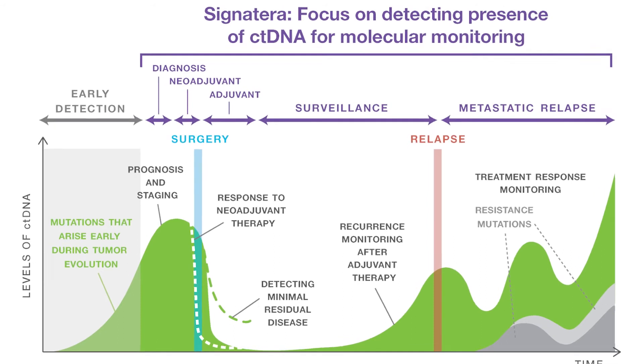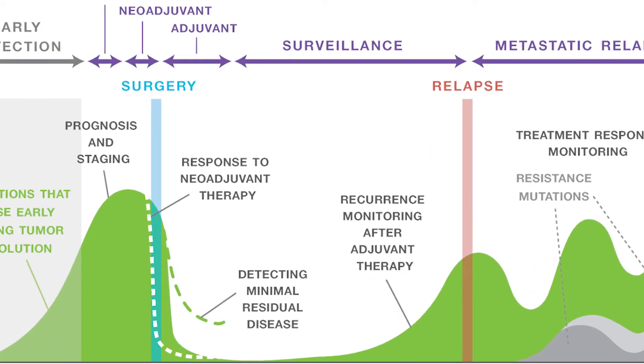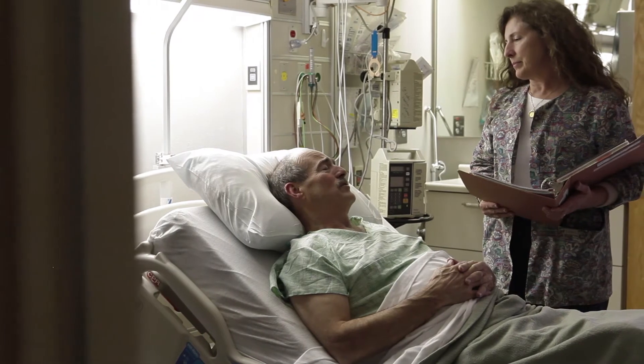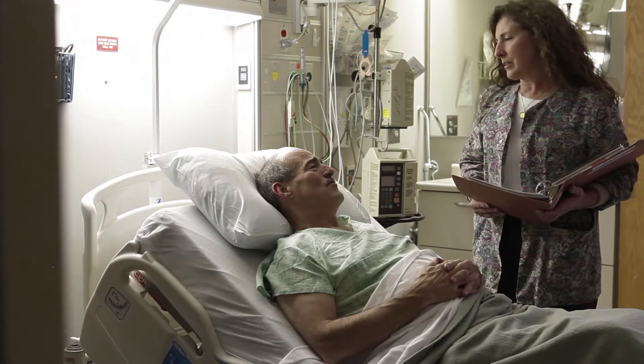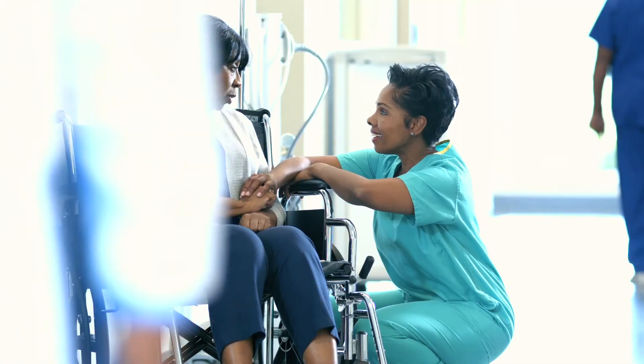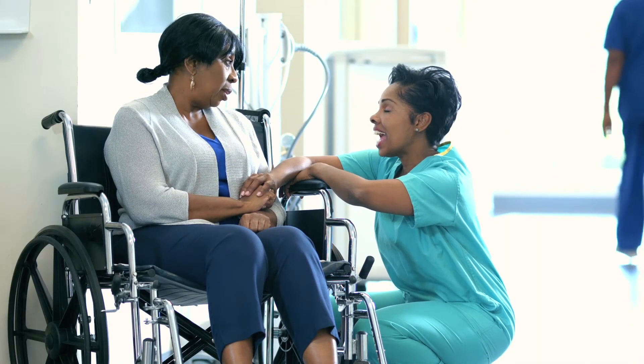Signatera can be used in a novel approach to better identify patients with disease that's destined to relapse. We call this molecular relapse, and molecular relapse can happen sometimes months if not years before clinical or radiological relapse. By identifying these patients and intervening earlier in their treatment, we can possibly bring novel pharmaceutical agents earlier into the molecular relapse setting.